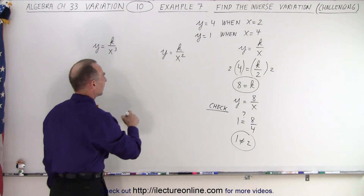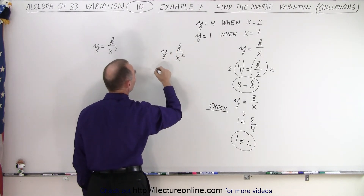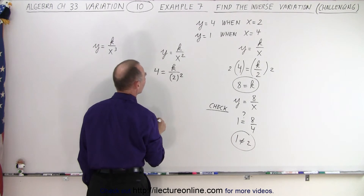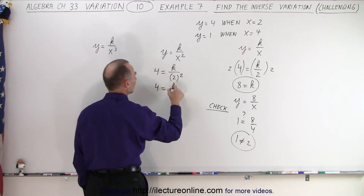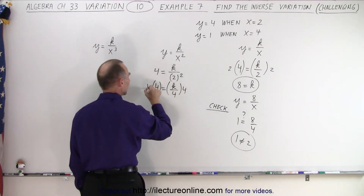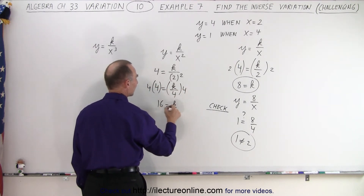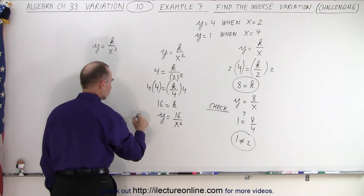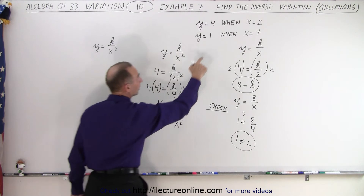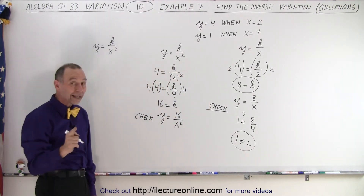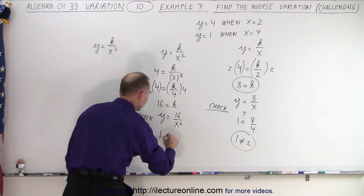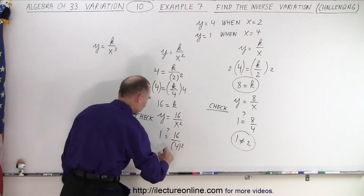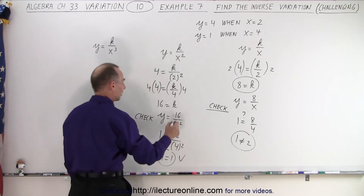Let's try the second one. We're trying to find the value for k by plugging in y and x. So y is equal to 4, and that equals k divided by x squared, where x is 2 squared. We get 4 equals k divided by 4, and multiplying both sides by 4, we get 16 is equal to k. That means y equals 16 divided by x squared. Now we check by plugging in the second set of values: y equals 1 and x equals 4, so 1 equals 16 divided by 4 squared. Since 4 squared is 16, we get 1 equals 1.